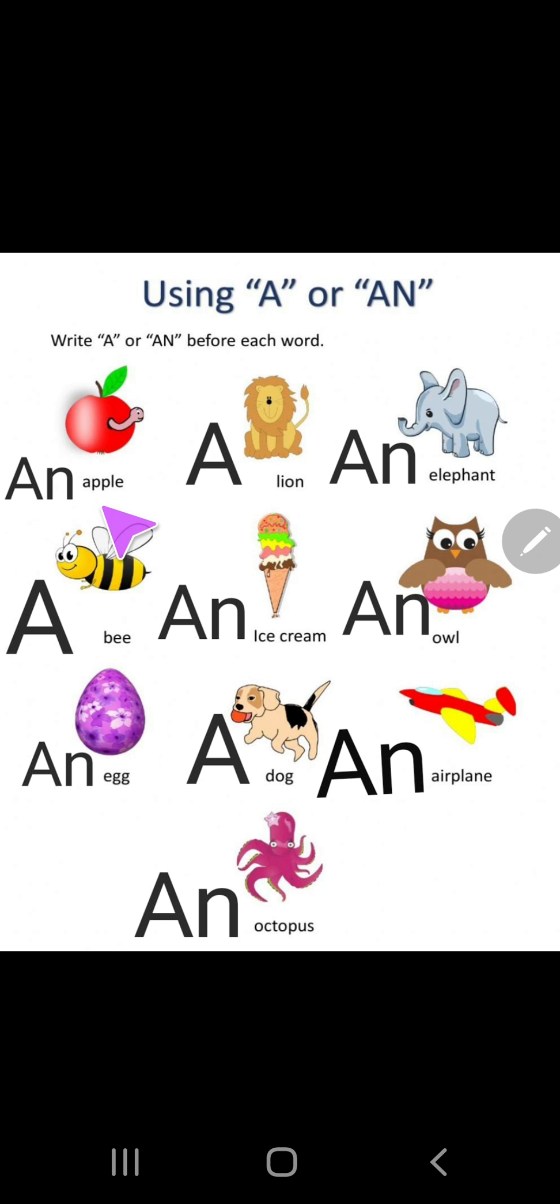This is a picture of apple. So we use an because A is the vowel. An apple. Lion. L-I-O-N lion. So L is consonant. We use a. Elephant. E is the vowel. So we use an.